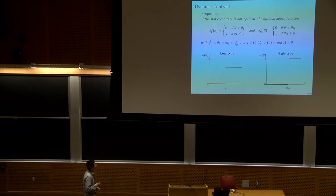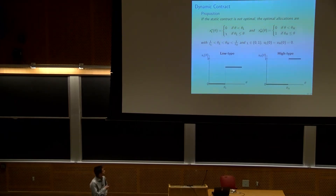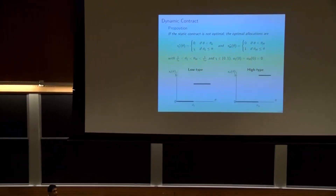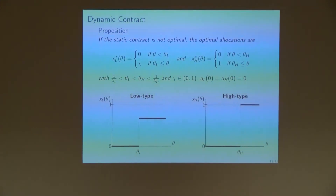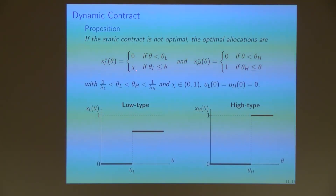When the static contract is not optimal, we can characterize the optimal dynamic contract. We have a proposition that gives the allocations. For the low type, we only allocate the object whenever her valuation is above a threshold θ_L and with some probability strictly lower than one, χ. For the high type buyer, we allocate the object whenever her valuation is above some threshold θ_H, and with certainty. The thresholds are ordered as follows: the mean of the low type is below θ_L, which is below θ_H, which is below the mean of the high type.